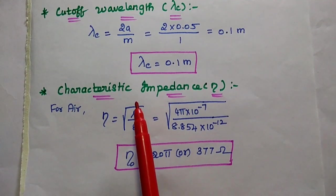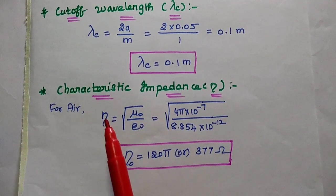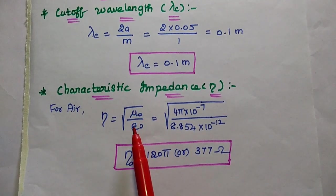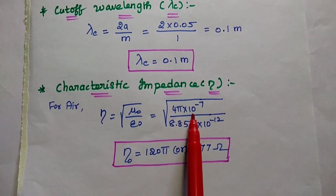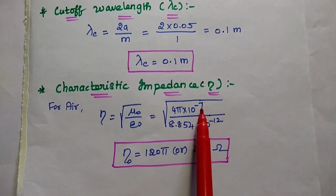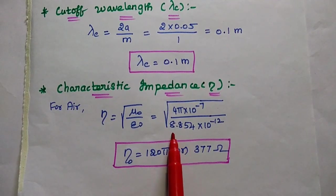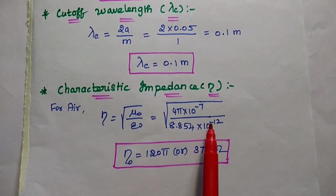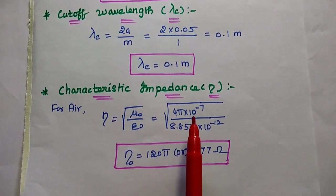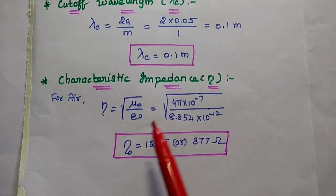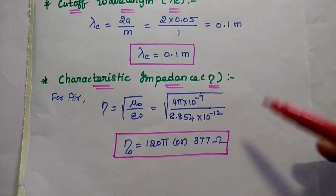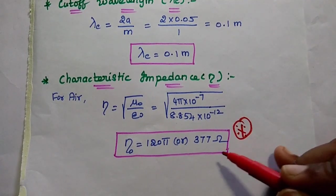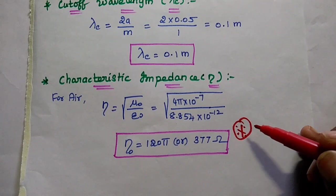The characteristics impedance for air medium: eta equals square root of mu naught by epsilon naught, where mu naught is 4 pi into 10 to the power minus 7 henry per meter, and epsilon naught is 8.854 into 10 to the power minus 12 farad per meter. Simplifying, the characteristics impedance for air medium is always 120 pi, or 377 ohm.